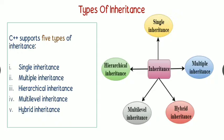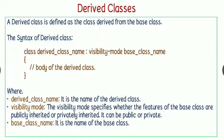Now let us see the types of inheritance supported by C++. There are five types: single inheritance, multiple inheritance, hierarchical inheritance, multi-level inheritance, and hybrid inheritance. This diagram shows that inheritance can be classified into these five types.